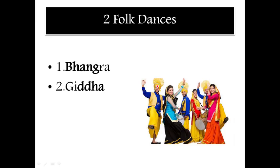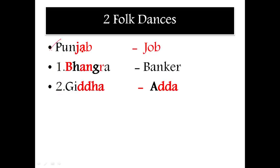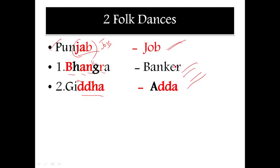Part 2: Folk dance of Punjab. In Punjab there are only two important folk dances: Bhangra and Giddha. The trick: Punjab sounds like 'Job'; Bhangra sounds like 'Banker'; Giddha sounds like 'Adda'. So the sentence is: 'I got a job in Banker's Adda.' Job = Punjab, Banker = Bhangra, Adda = Giddha.